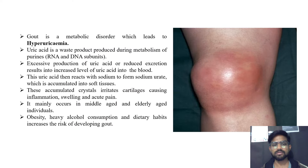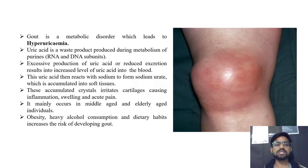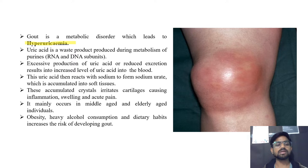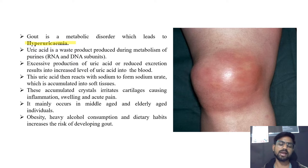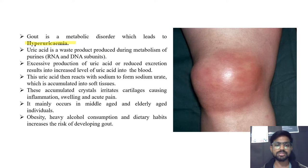Gout is a metabolic disorder which leads to hyperuricemia. Now what is hyperuricemia? 'Hyper' means excess, and 'uricemia' refers to uric acid — so hyperuricemia is the excessive accumulation of uric acid in our body, in the joints, cartilages, and organs like the kidney.